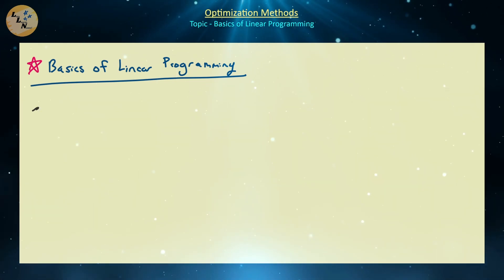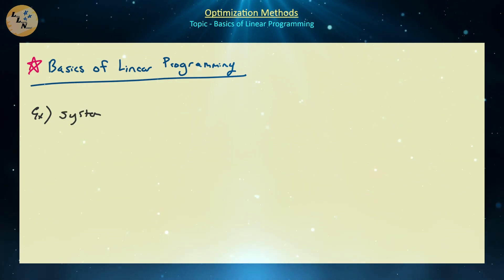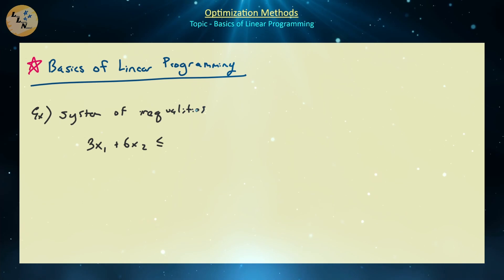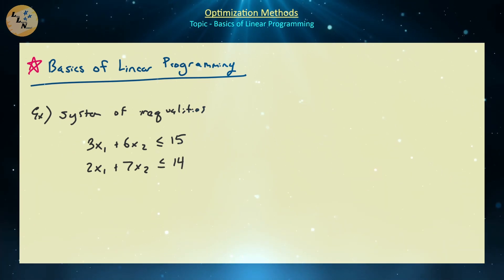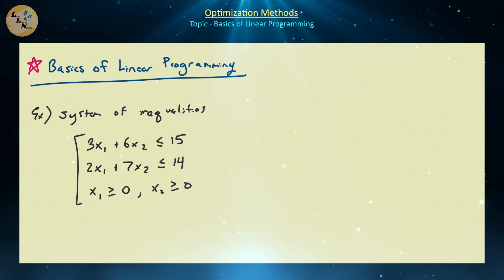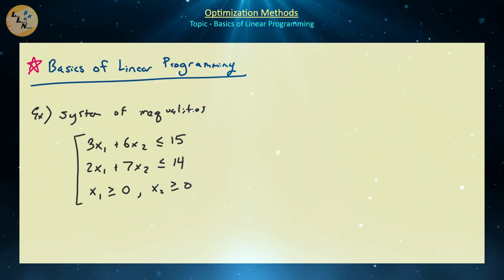Let's start off by giving a little example that you can visualize in two-dimensional space. Consider the system of inequalities: 3x1 plus 6x2 is less than or equal to 15, and 2x1 plus 7x2 is less than or equal to 14, with the conditions that x1 and x2 are both greater than or equal to 0. So technically we have four inequalities with two variables x1 and x2. We're going to be extending this to several different variables, so we use subscript notation rather than xyz.